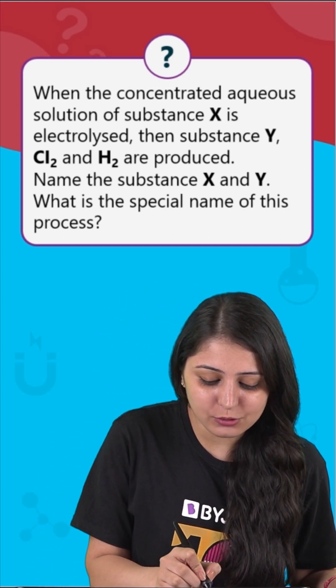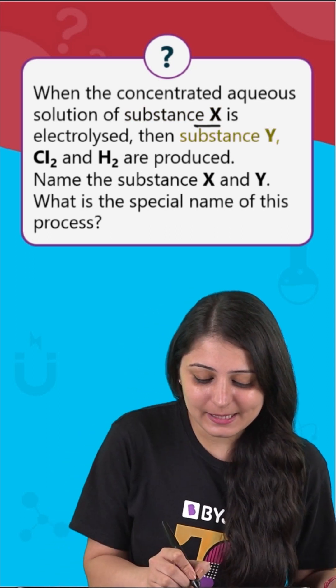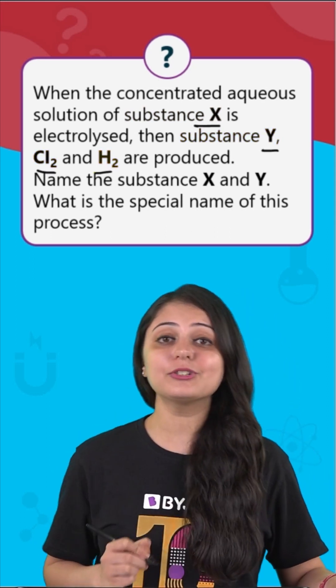when the concentrated aqueous solution of substance X is electrolyzed, then substance Y, Chlorine and Hydrogen are produced.